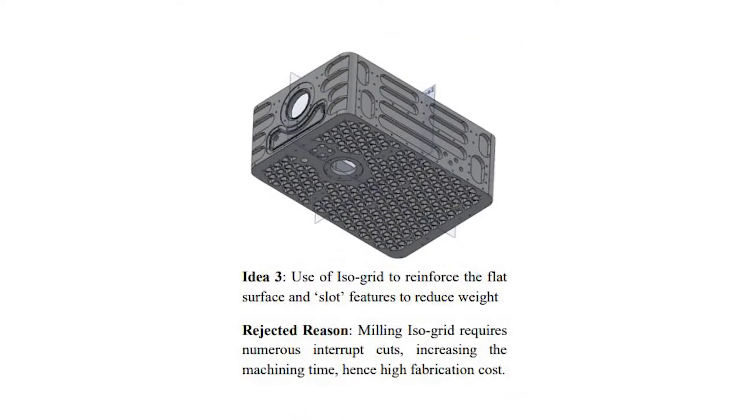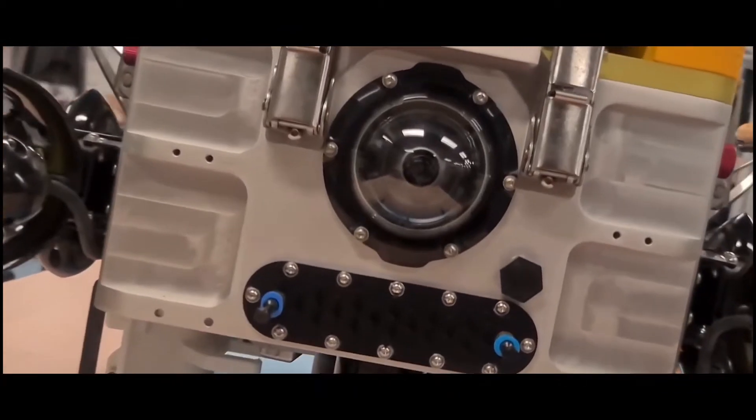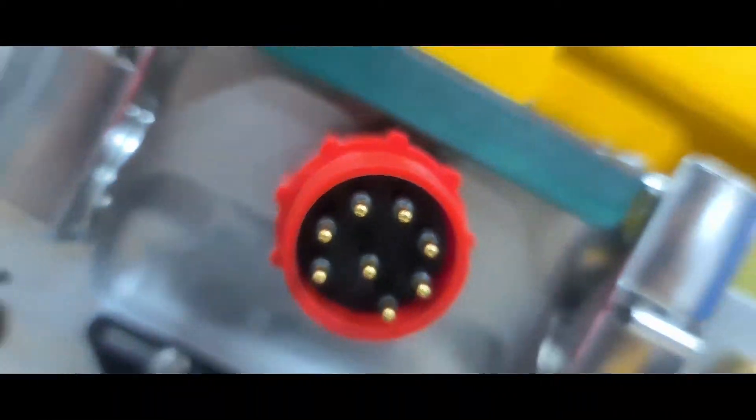Mimicking the design cues taken from our metal 3D printed battery hulls, we explored the use of an isogrid to reinforce the flat hull walls, allowing for a reduction of wall thickness and hence a reduction in the overall weight of the hull. Despite the benefits that this design offered us, we soon came to realize that milling isogrid required numerous interrupt cuts, which increases the machining time, leading to an overall higher fabrication cost. The complexity and size of the main hull also meant that metal 3D printing would not be feasible. We decided to simplify the design, opting for a more conventional system of internal ribs to allow for the hull to be milled in one piece.